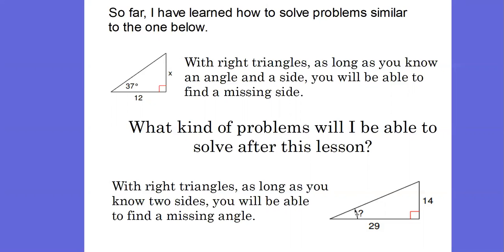So now the big question is, if I have a right triangle and I know what two of my three sides are, how exactly can I find this angle? With right triangles, as long as you know two sides, you will be able to find a missing angle.